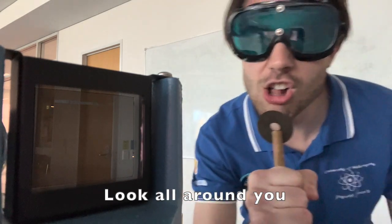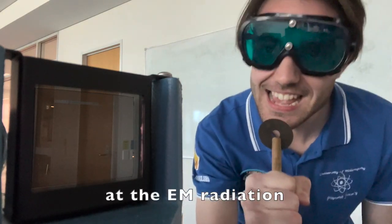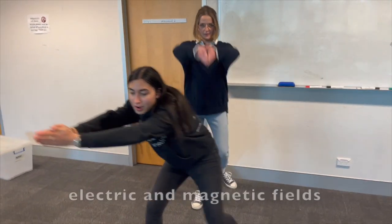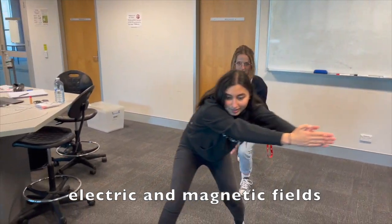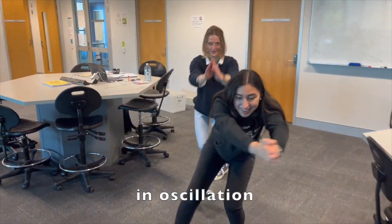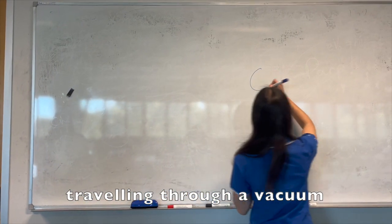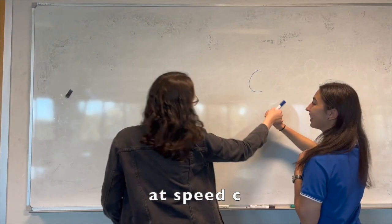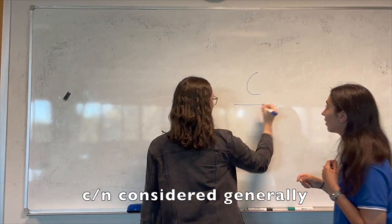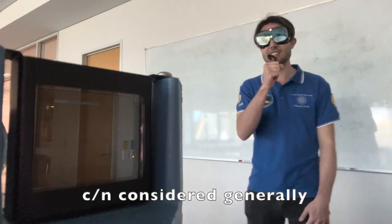Look all around you at the EM radiation. Electric and magnetic fields in oscillation. Traveling through a vacuum, speed C. C over N considered generally.